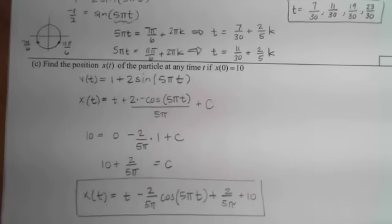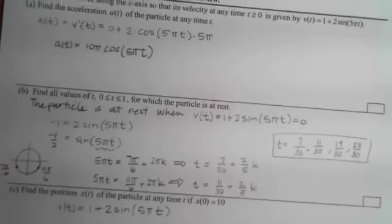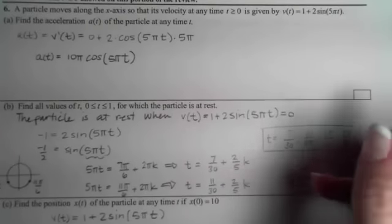Now let's look at the point breakdown. For part A, we're going to get 2 points just for taking the derivative and using the chain rule.